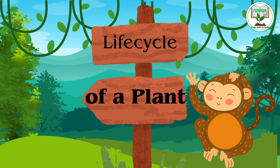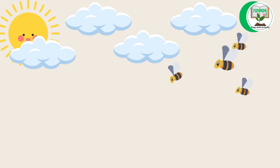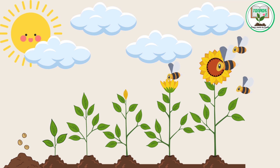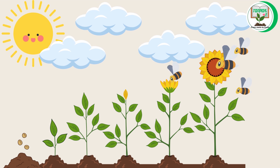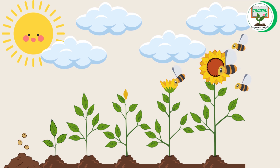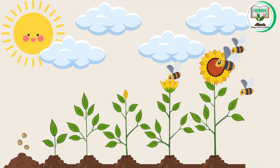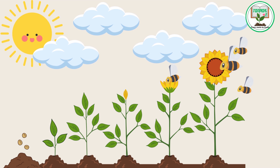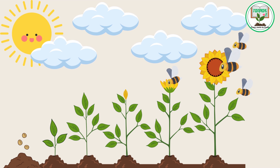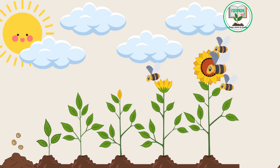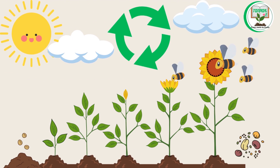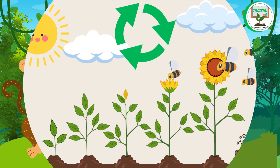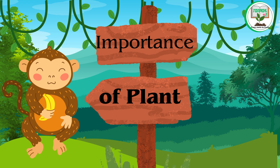Life cycle of a plant: plants go through different stages in their life cycle, starting from seed germination to growth, flowering, pollination, and seed production. This cycle repeats as new seeds are produced and dispersed.